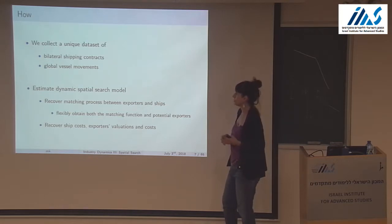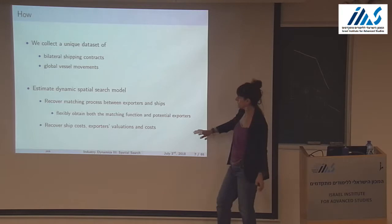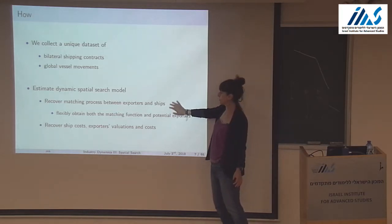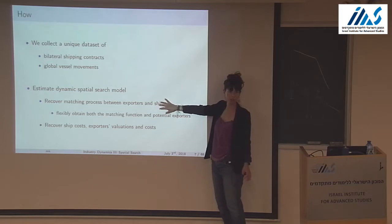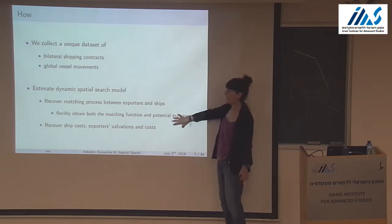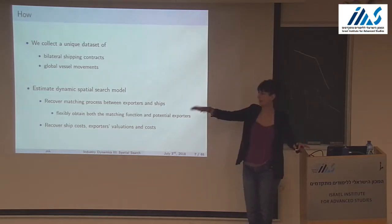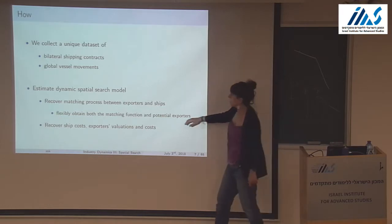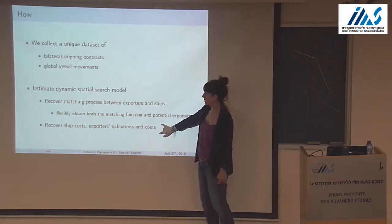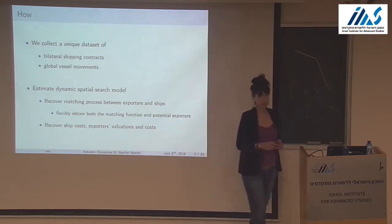The data includes information on bilateral shipping contracts — how much you paid to ship grain from port A to port B — plus a dataset of global vessel movements. We use the machinery of dynamic games, writing down a very simple dynamic spatial search model going after two main sets of primitives: the matching process between exporters and ships, and standard primitives like ship costs, exporter valuations, and entry costs into exporting.